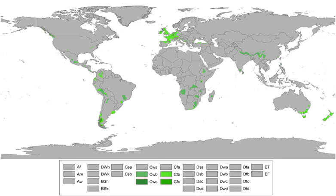Oceanic climates are a product and reflection of the ocean adjacent to them. In the fall, winter, and early spring, when the polar jet stream is most active, the frequent passing of marine weather systems creates the frequent fog, cloudy skies, and light drizzle often associated with oceanic climates. In summer, high pressure often pushes the prevailing westerlies north of many oceanic climates, often creating a drier summer climate — for example in the northwest coast of America, bathed by the Pacific Ocean.